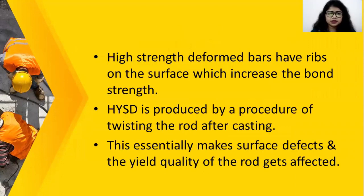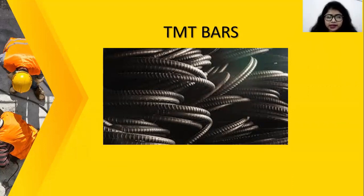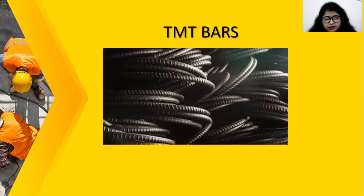Next bar we have is the TMT bars. In this figure, you can see these are the TMT bars. TMT bars are thermomechanically treated bars whose manufacturing process includes hot rolled steel wires going through water, which makes the surface harder and keeps the center hotter and milder.